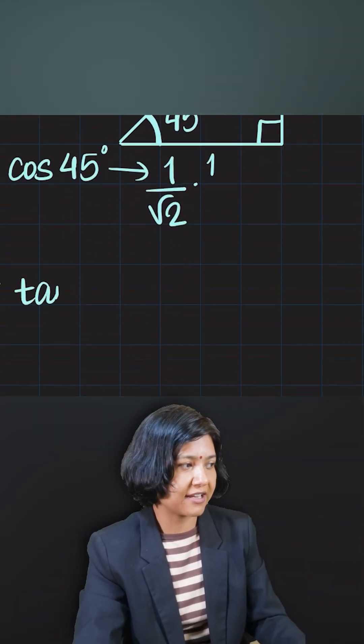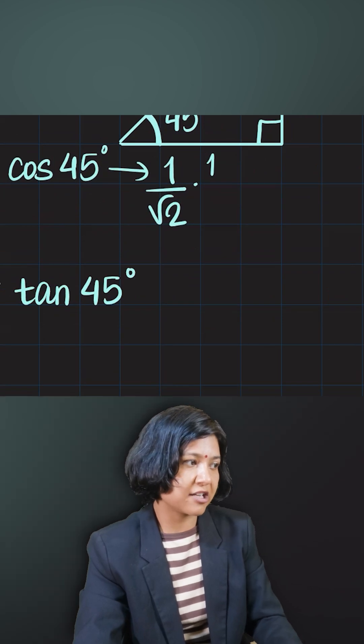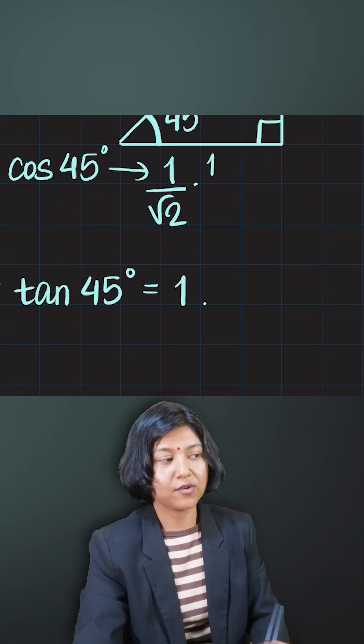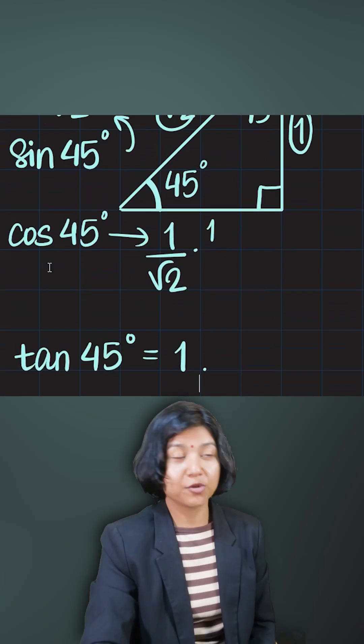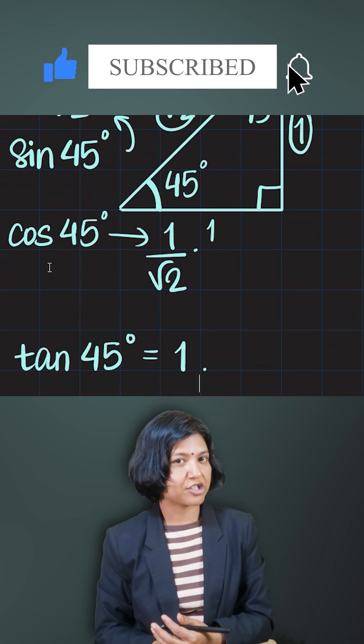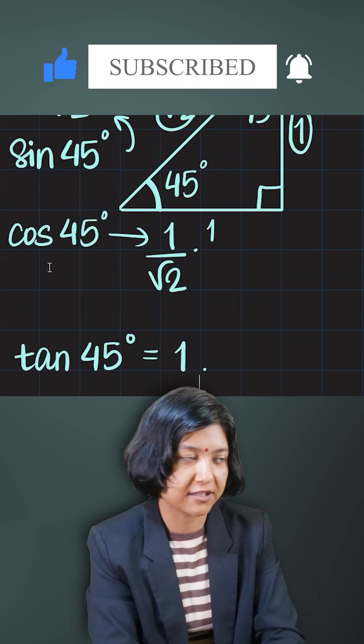Eventually giving you the tan 45 value, as tan being the ratio of sine to cos. Because the values are equal, tan 45 is one. And when you know these values, you can always find the other three trigonometric ratios without having to worry about it.